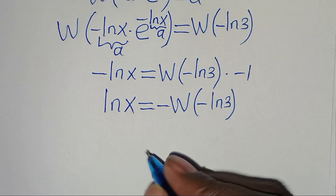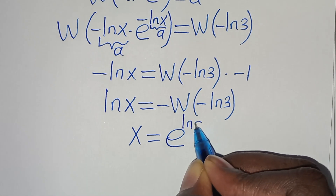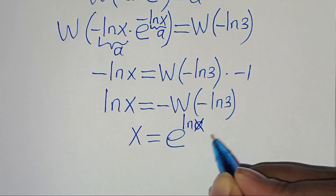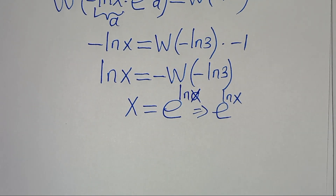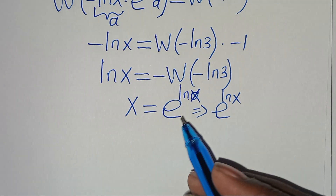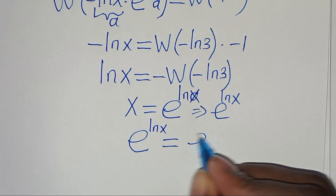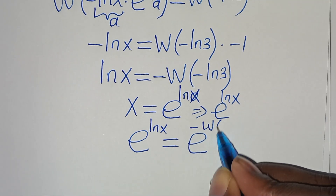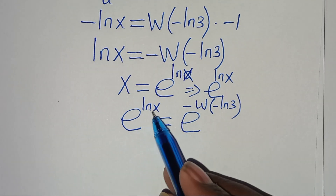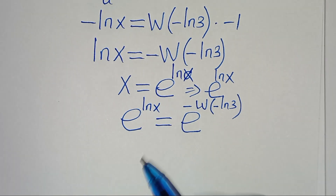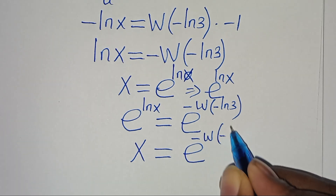Now, since x is the same as e to the power of ln(x), this implies that we can express ln(x) in the exponent: e to the power of ln(x) equals e to the power of minus the Lambert W function of minus ln(3). Therefore, x equals e to the power of minus W of minus ln(3).